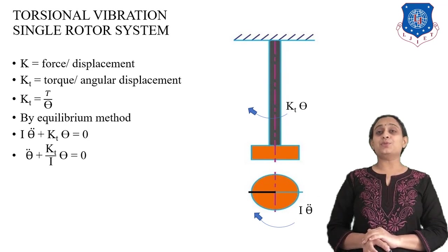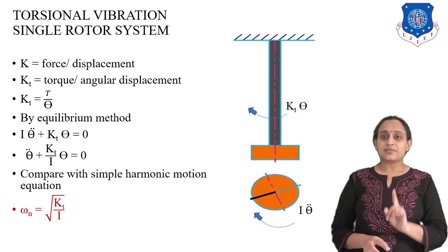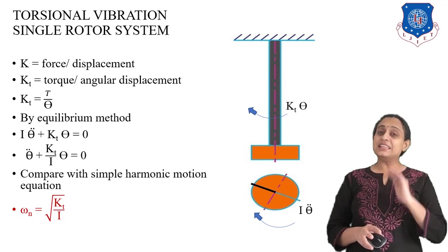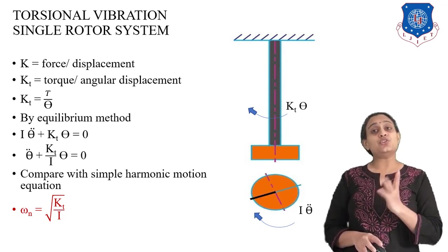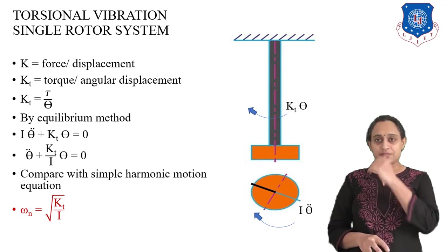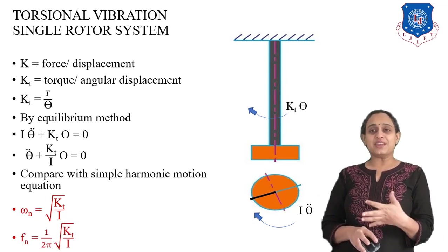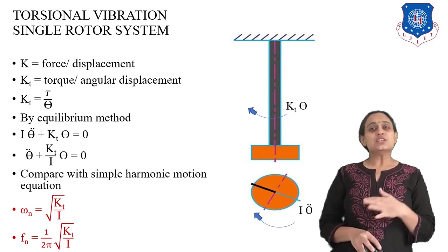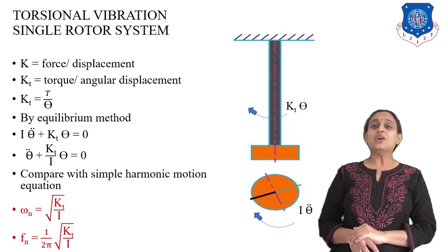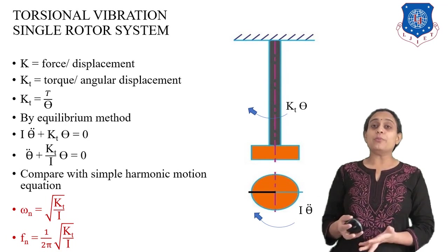Comparing this with the simple harmonic motion equation, we get ωₙ = √(KT/I). This is the equation for natural angular velocity for torsional vibration, compared to ωₙ = √(K/M) for linear or longitudinal vibration. The natural frequency is then fₙ = (1/2π)·√(KT/I). This is a very important theory, and combined with spring-mass theory, it allows us to solve many numerical problems.